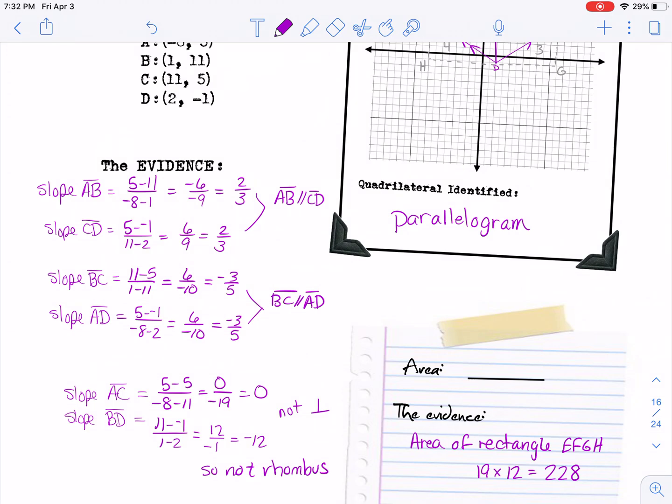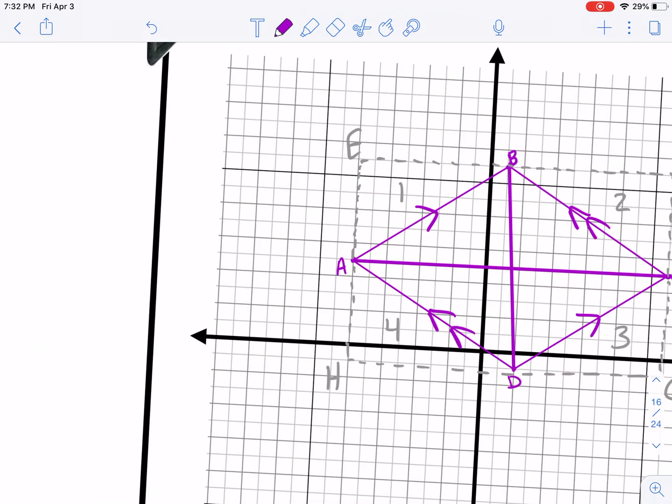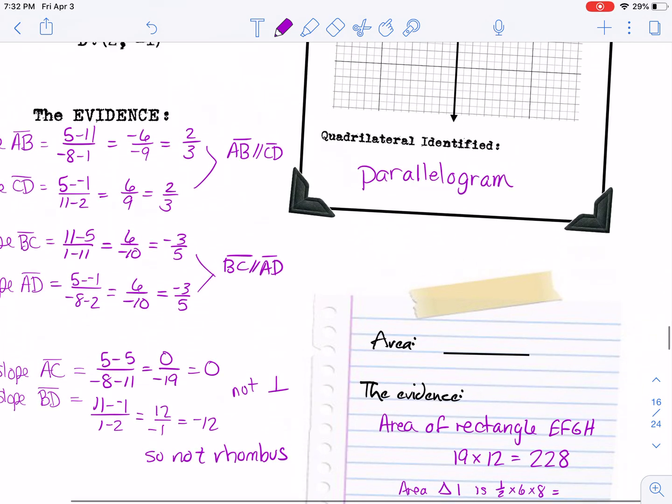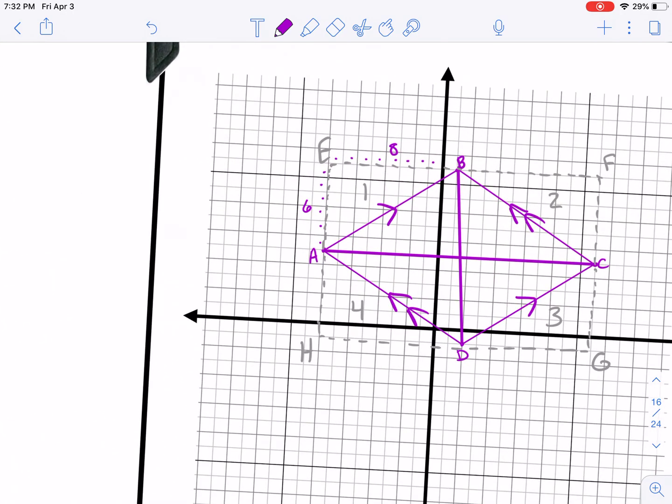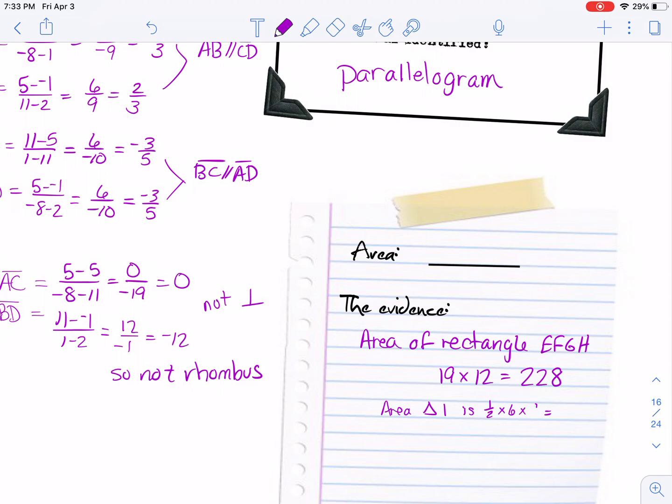Then we need to find the areas of the little triangles. So the first one is triangle EAB. So we need to count those: 6 by 9. So the area of triangle 1 is 1/2 times 6 times 8—well, that's 24, but apparently I counted wrong. Oh, 9, goes all the way across to B, missed that. So that is 9, not 8. So half of 54 is 27.